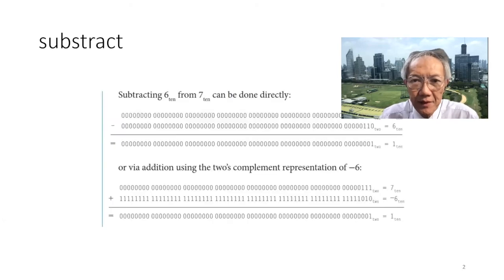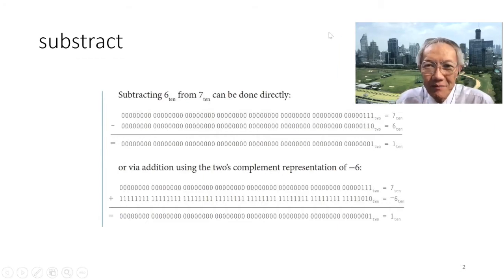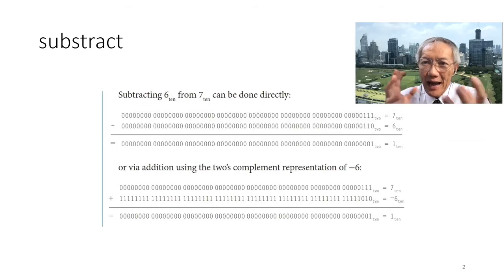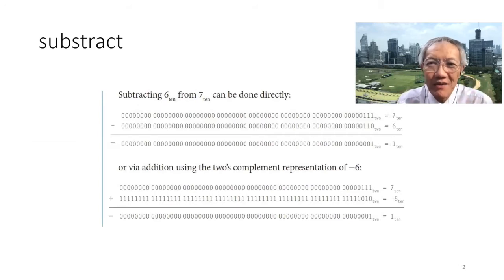Let's begin with addition and subtraction. Addition and subtraction are quite similar in the modern process because this is a two's complement number system.